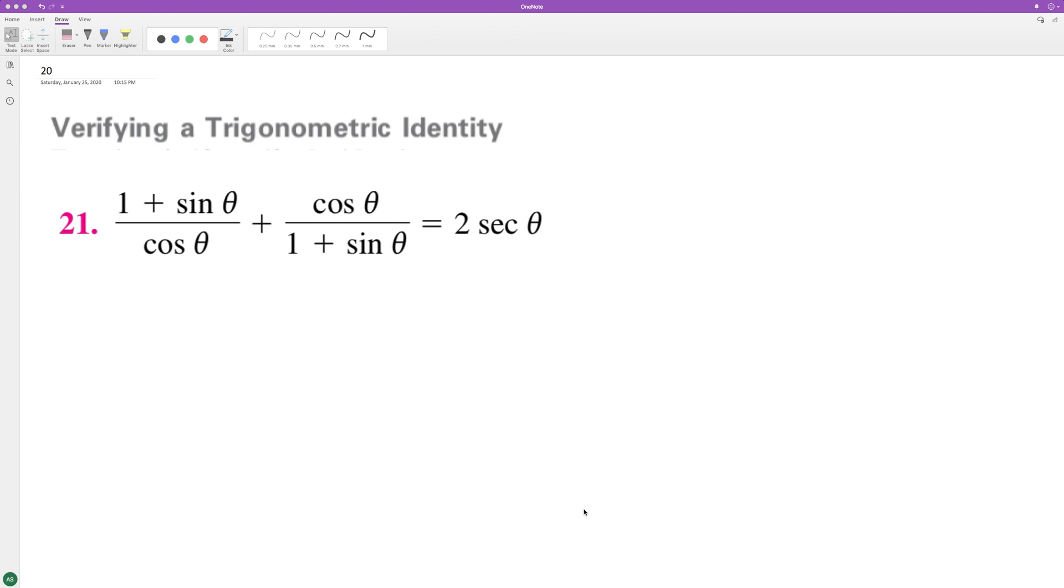First we'll get our common denominator which would be cosine theta times 1 plus sine theta. So then when we multiply this we're gonna get 1 plus sine theta